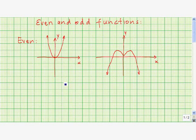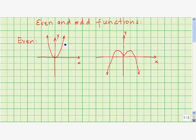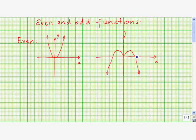One way to think about an even function is that its graph is symmetric about the y-axis. If you were to fold the graph along the y-axis, you see that this piece will match up exactly with this piece. The same is true with this graph over here — it's symmetric with respect to the y-axis because if you fold it along the y-axis, these two pieces will match up.